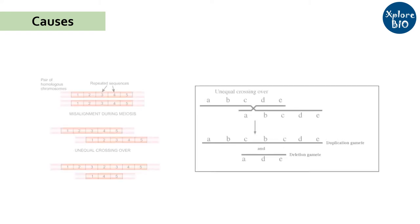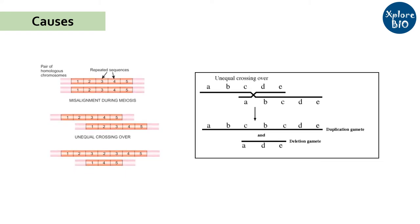But what causes copy number variations? The most common cause of copy number variation is unequal crossing over during meiosis when both the parental chromosomes align to each other. However, there are other mechanisms leading to CNVs too.